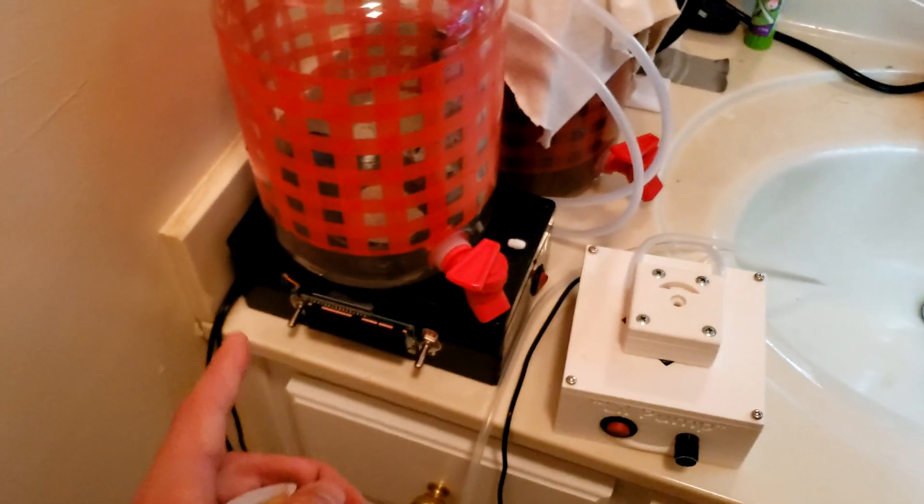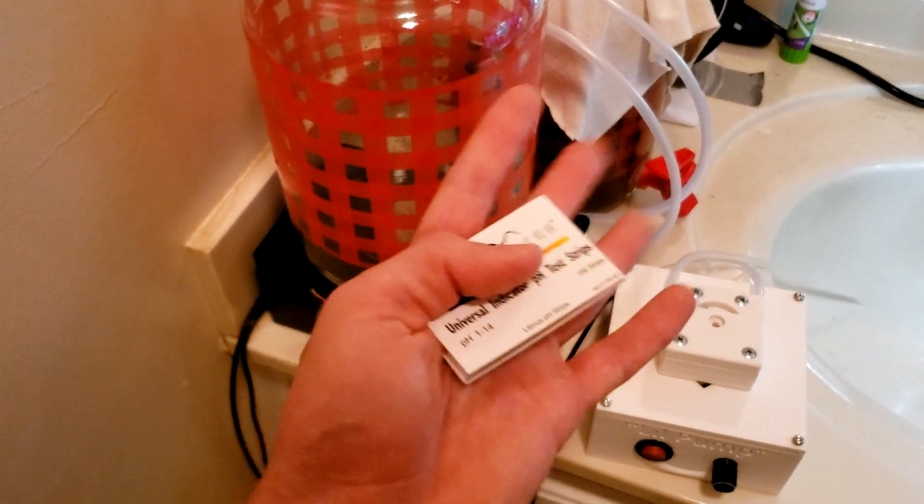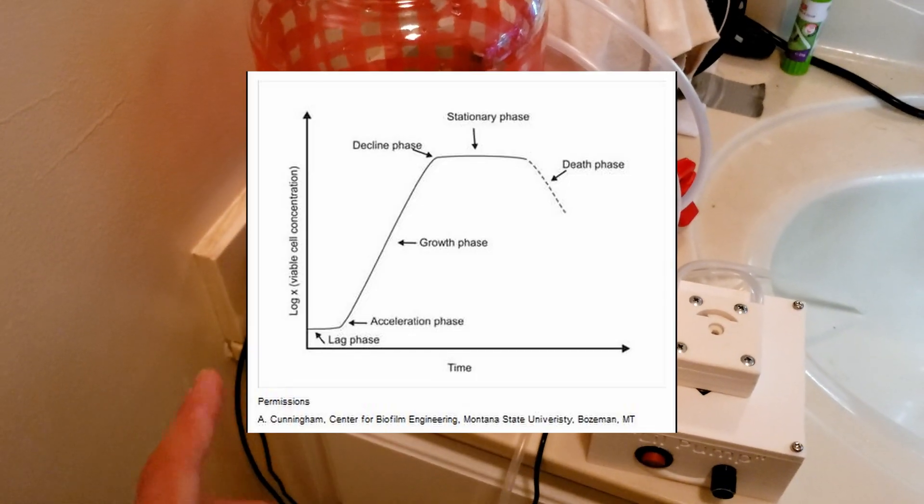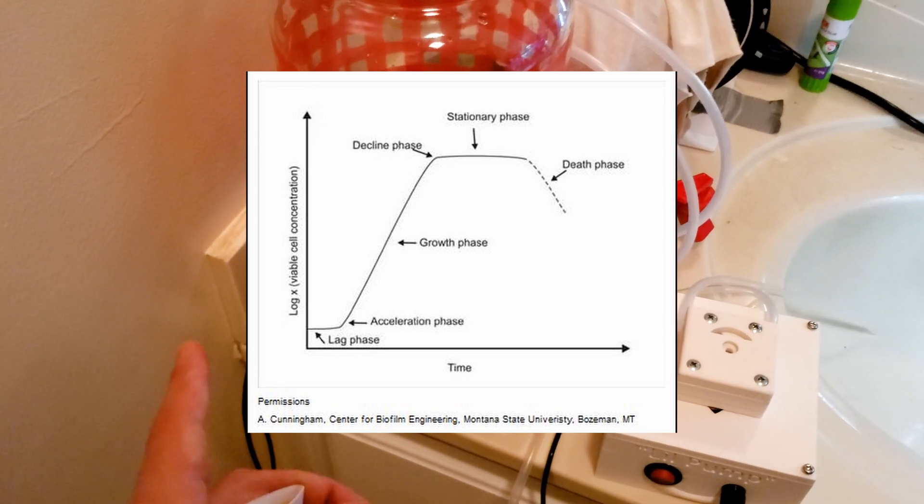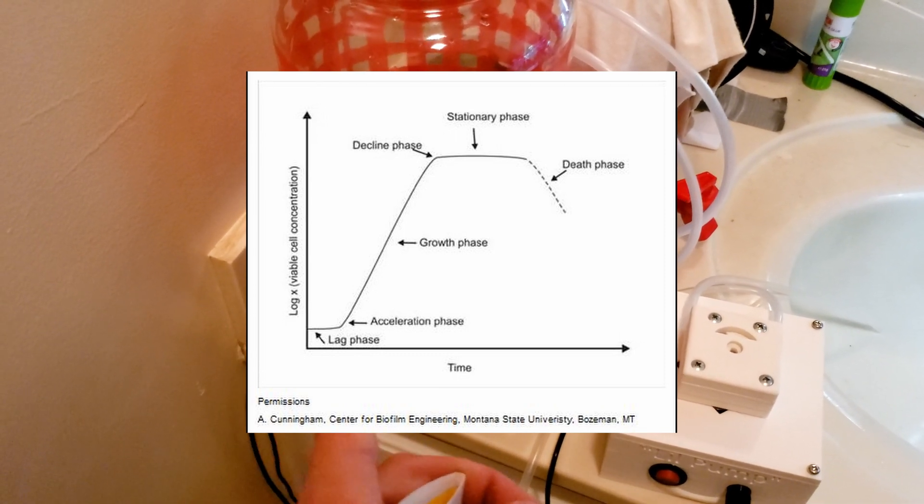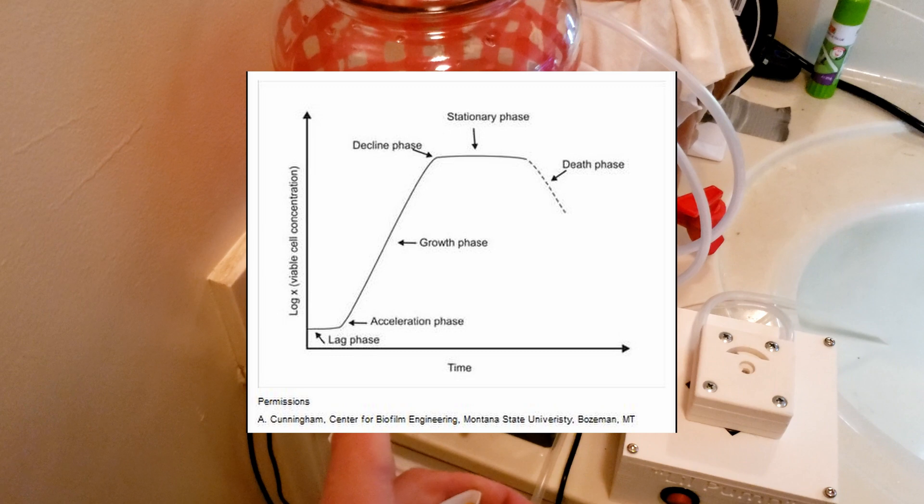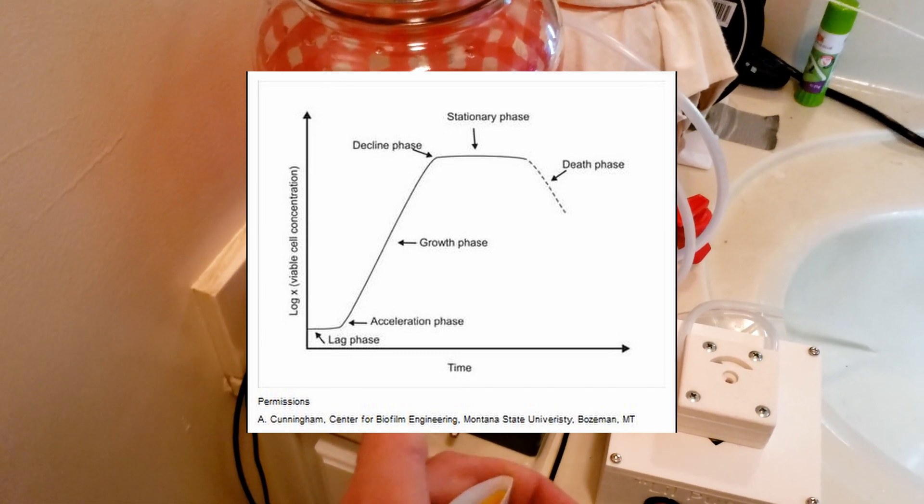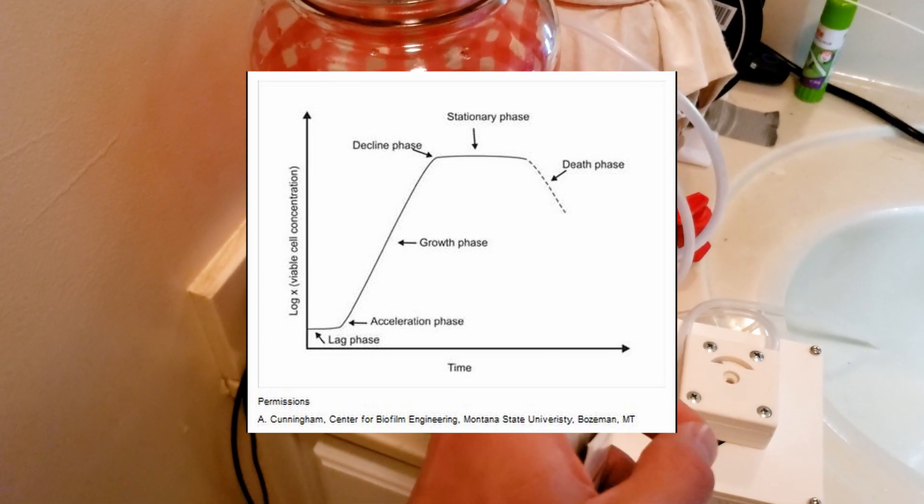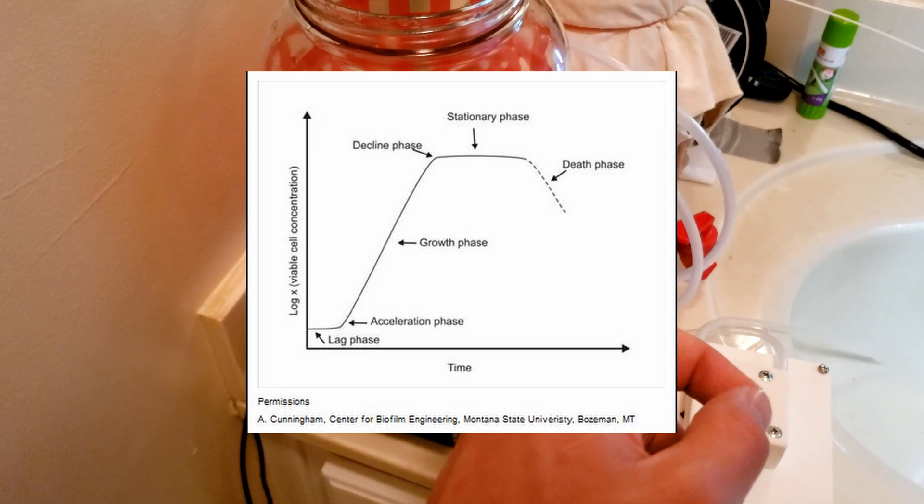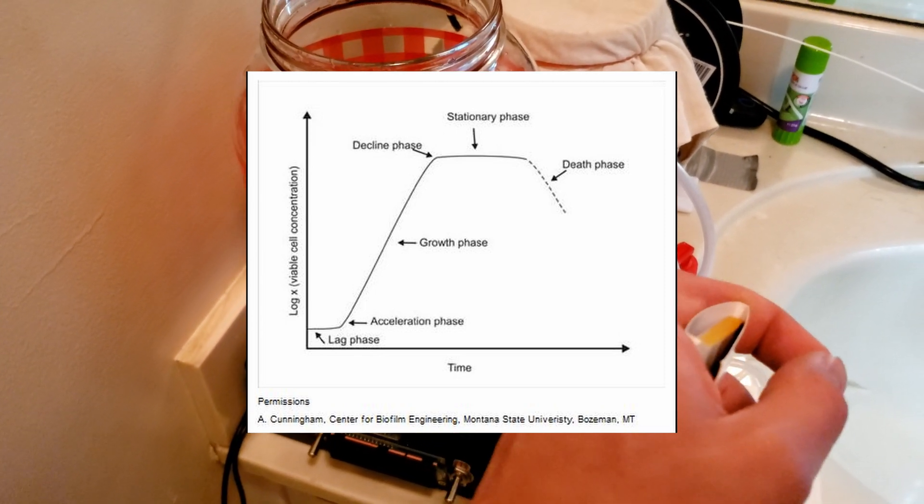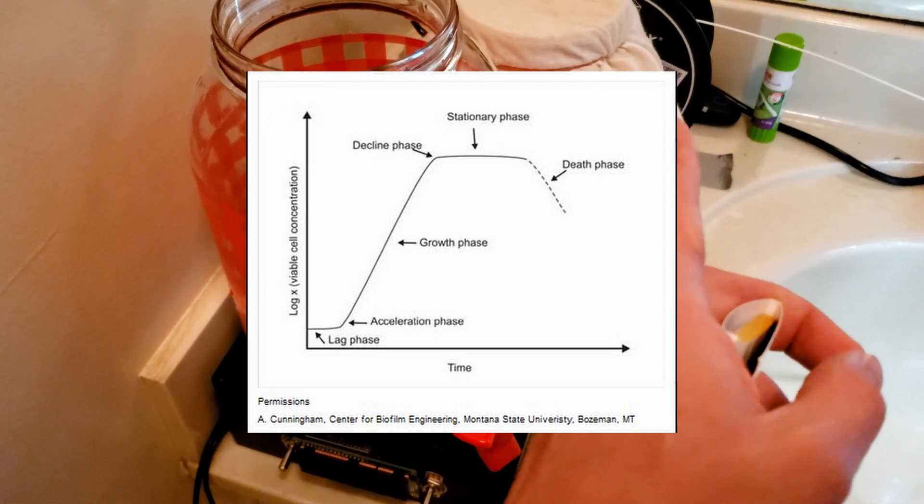So when you do a traditional batch process, maybe I can add a graph on the screen or something like that. When you run a traditional batch process, there's a lag phase where it takes a minute for the organisms to figure out what's going on. And then you'll enter this exponential growth phase. And then once most of the substrate is consumed, it will start slowing down.